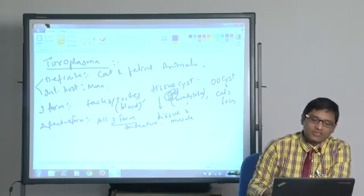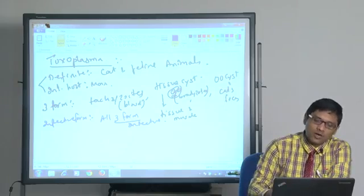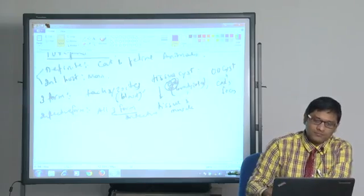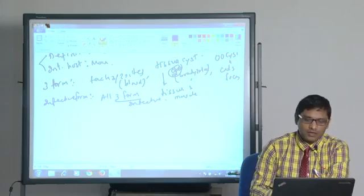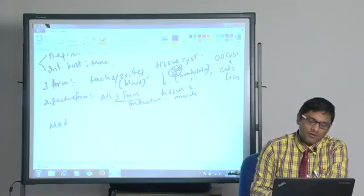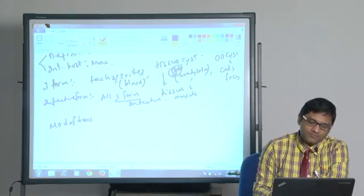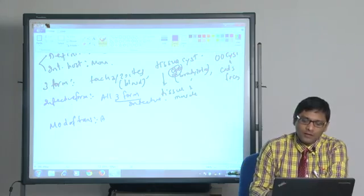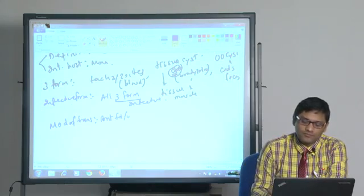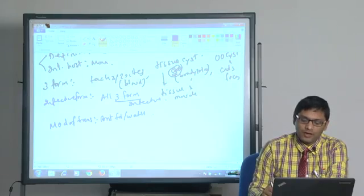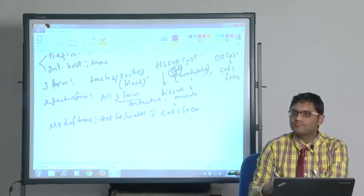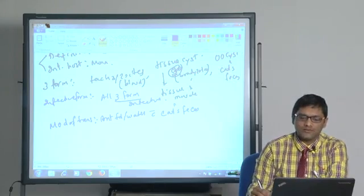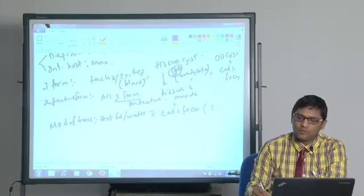But if they ask you which is the most common infective form, then the most common infective form is related to the most common mode of transmission. The most common mode of transmission is contaminated food and water with cat's feces, that means the infective form is oocyst.